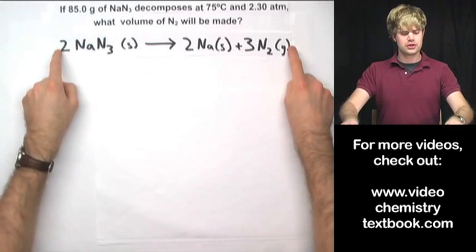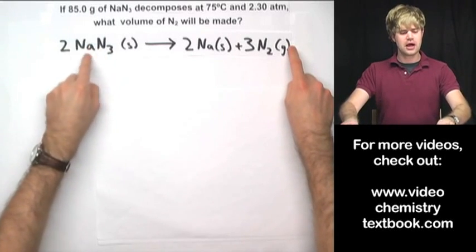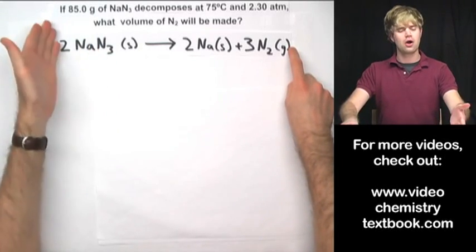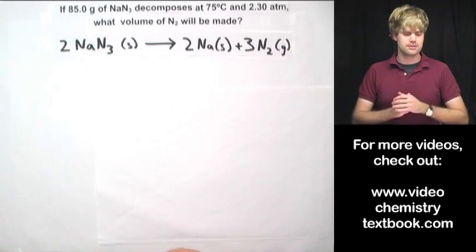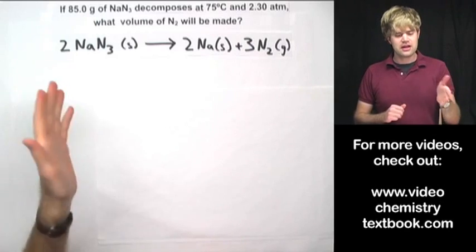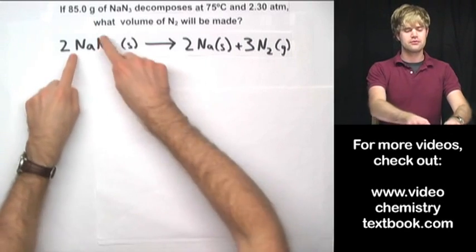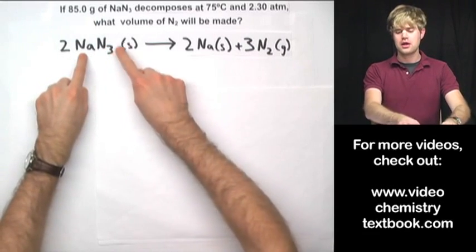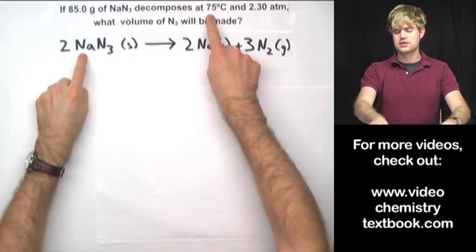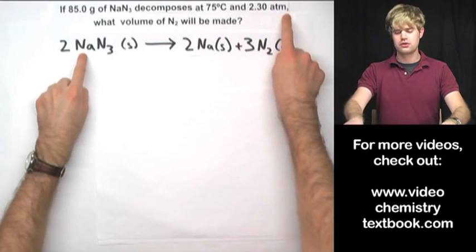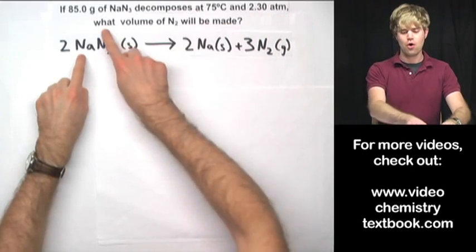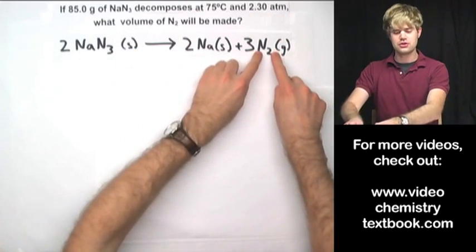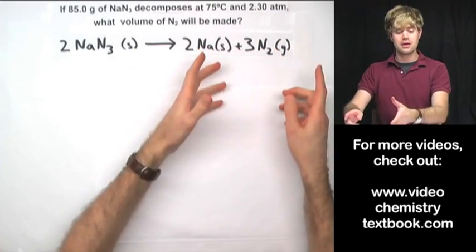Using this equation for the decomposition of sodium azide, our question asks: if 85 grams of NaN3 decomposes at 75 degrees Celsius and 2.3 atm, what volume of N2 will be made?